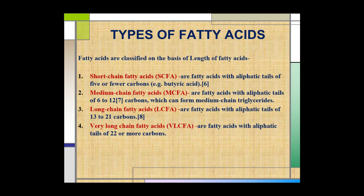Types of Fatty Acids. On the basis of length, fatty acids are classified into 4 types: short chain fatty acids, medium chain fatty acids, long chain fatty acids, and very long chain fatty acids. Fatty acids with aliphatic tails of 5 or fewer carbons are short chain; 6 to 12 carbons are medium chain; 13 to 21 carbons are long chain; and 22 or more carbons are very long chain fatty acids.